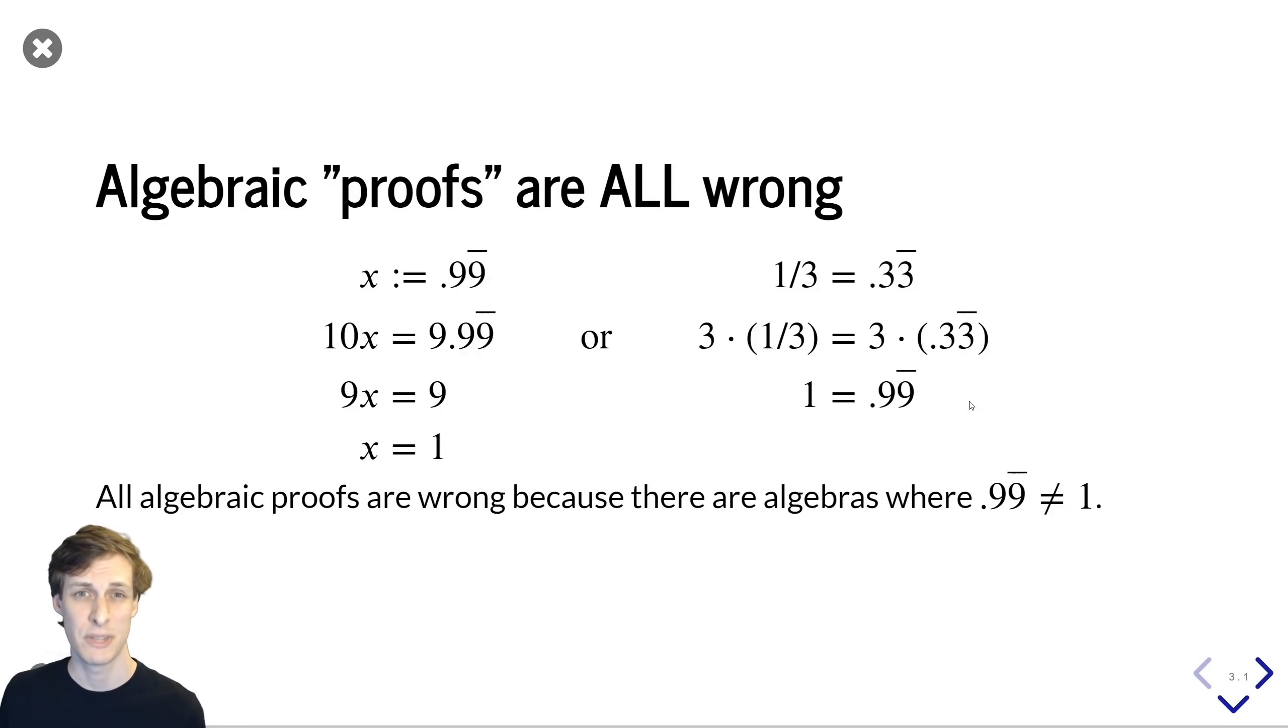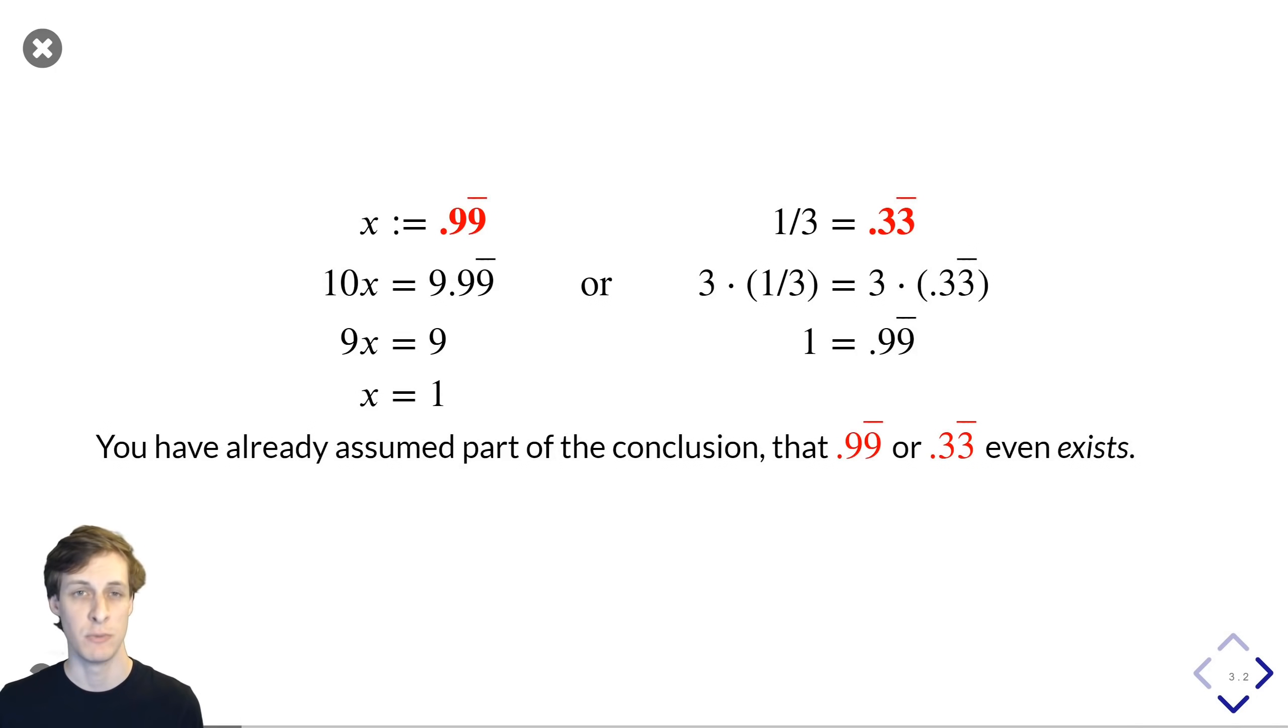Well, it turns out there are multiple mistakes in these proofs. Well, right at the very start, we've actually made a huge mistake. Just by writing 0.99 repeating, I'm implicitly assuming that it exists. If 0.99 repeating didn't exist, then I wouldn't be able to multiply it by 10 and then solve for it.